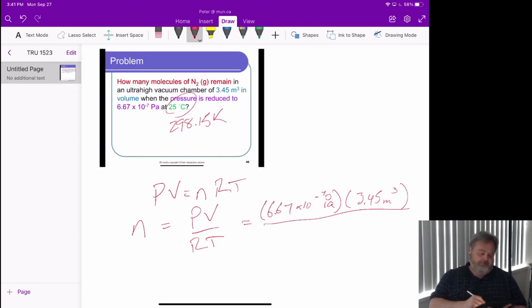We're going to divide that by. Again, we need the gas constant that's connected to pascals and cubic meters. Well, we know it, 8.3145 pascal cubic meter per kelvin per mole. And then our temperature, 298.15 kelvin. I almost run out of room on the screen here.